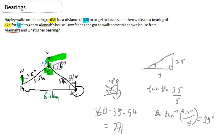So therefore the bearing from Alana's house to Hayley's house, or to Hayley's house from Alana's house (and that's how you've got to look out for the words), is 271.